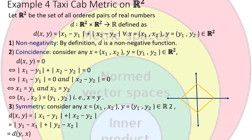After the Euclidean metric, we have the taxicab metric on R2. Let R2 be the set of all ordered pairs of real numbers, and d be the function defined from R2 cross R2 to R, defined as d(x,y) equals the modulus of (x1 minus y1) plus the modulus of (x2 minus y2), for all x equals (x1, x2) and y equals (y1, y2) in R2.